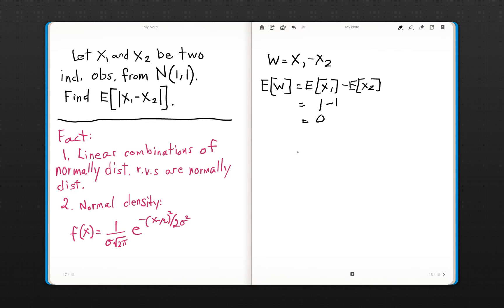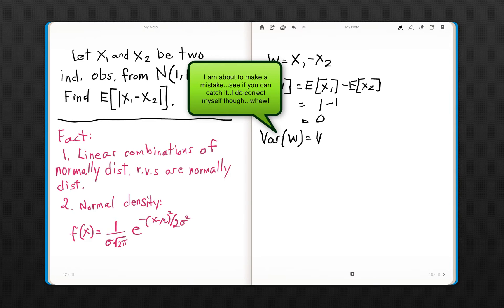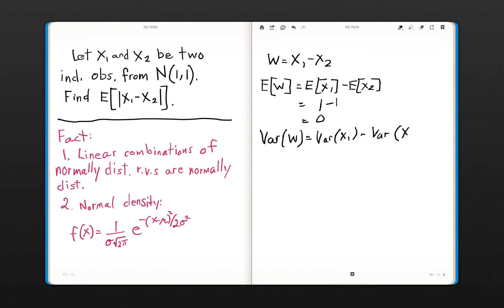Okay, since these were independent observations, the variance falls out as well, very quickly. The variance of W, in this case, since they are independent, is the sum of the variances. So the variance of X1 plus the variance of X2, which is just equal to 1 plus 1, and this is just equal to 2. So the variance of W is 2. But not only do we have the mean and the variance of W, we actually know what the distribution is.